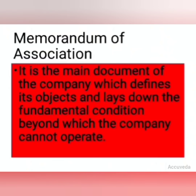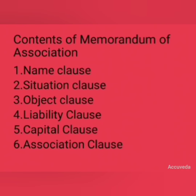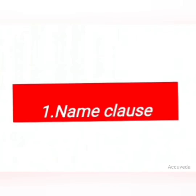The contents of the Memorandum of Association include: name clause, situation clause, object clause, liability clause, capital clause, and association clause. The first is the name clause — under this clause, the name of the company is mentioned. A company can have any name subject to some restrictions. The proposed name should not be identical with or closely resemble the name of another company. The word 'Limited' or 'Private Limited' must be the last word in the name of every public or private limited company.